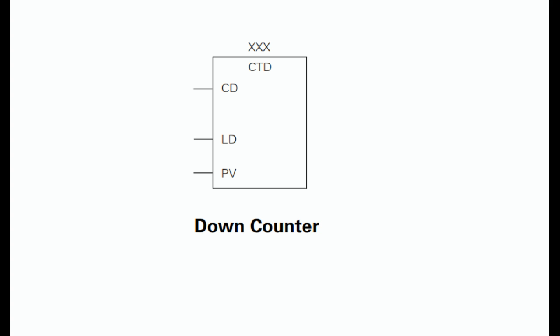Down counter: The counter counts down from the preset value (PV) each time CD transitions from a logic 0 to a logic 1. When the current value is equal to 0, the counter output bit Q turns on. The counter resets and loads the current value with the preset value (PV) when the load input (LD) is enabled.